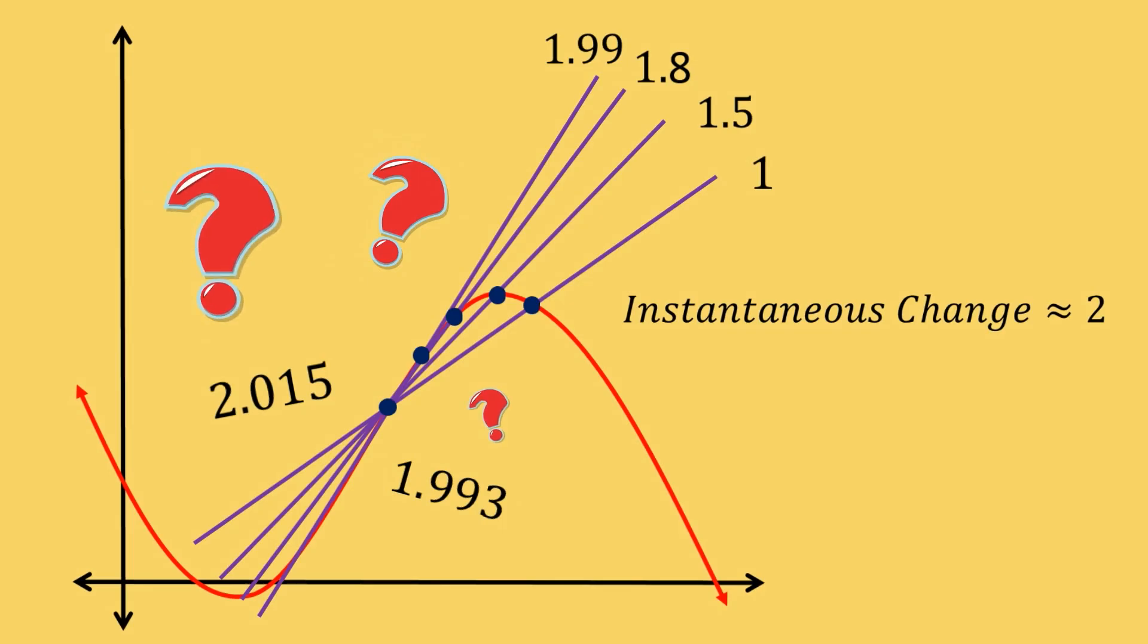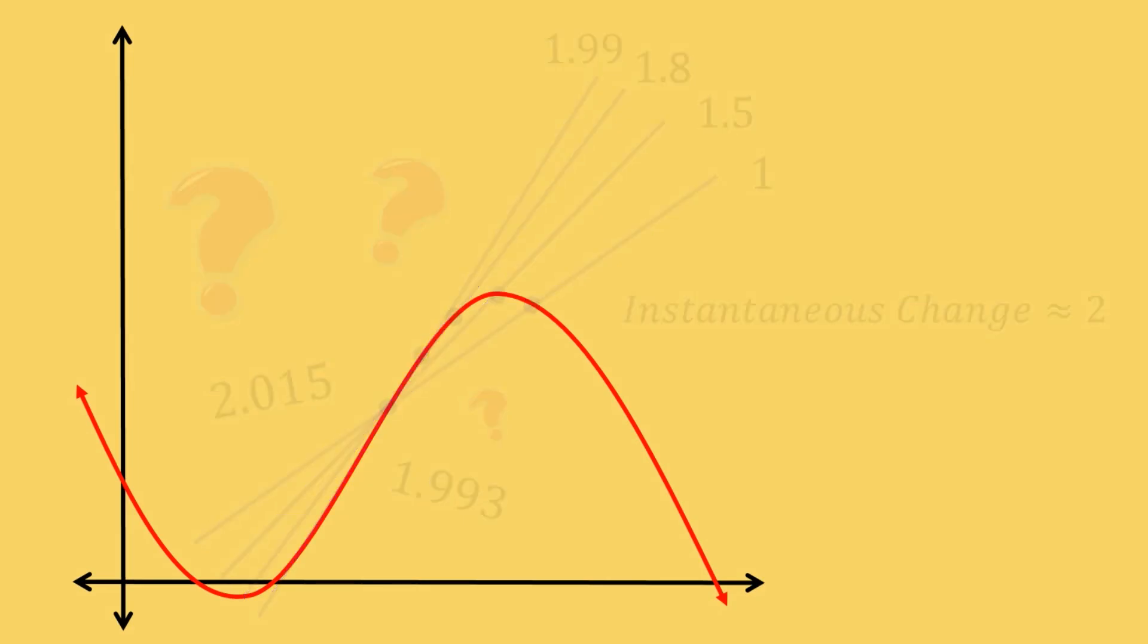We can move these points closer together to gather more evidence but it'd be much better if we had an exact way of knowing what value this rate was approaching. A method for finding the limiting value exactly.